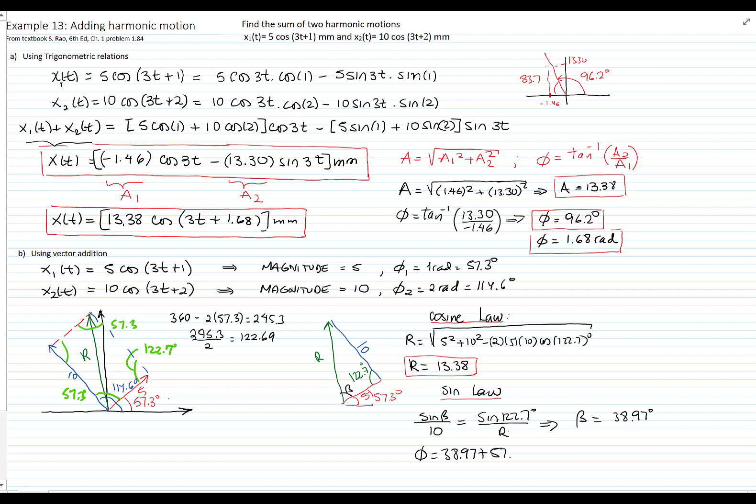So I add that one, and as a result, I get that phi is equals to 96.2 degrees, which is 1.68 radians. And as you see, that's the same answers we got with the previous method. Now we can write the answer.